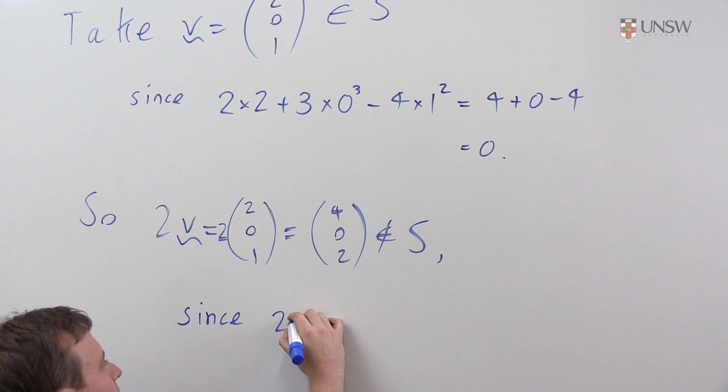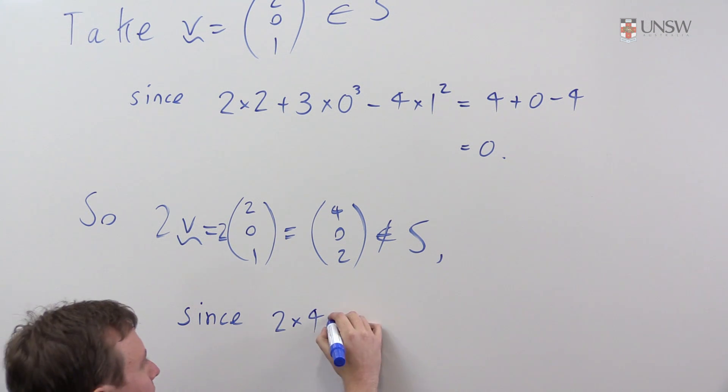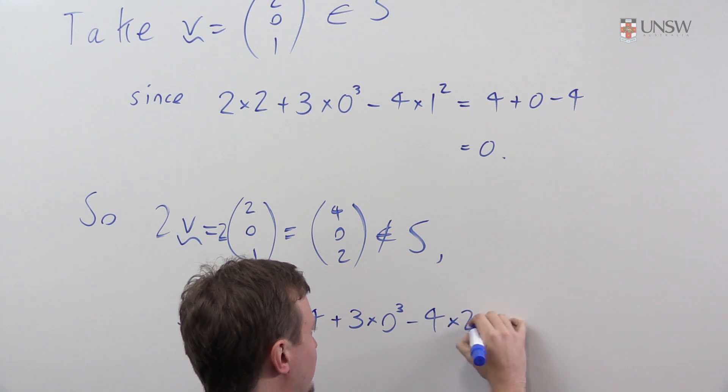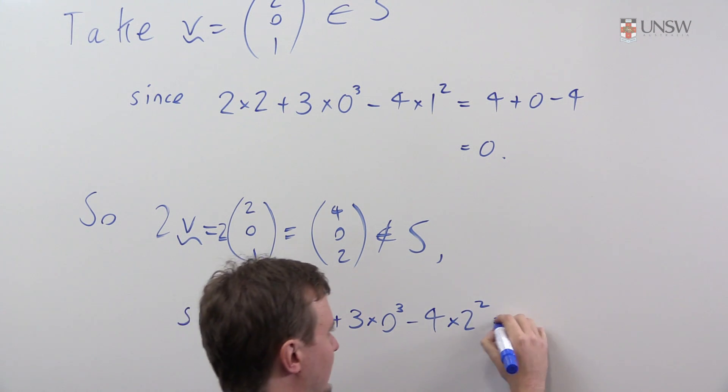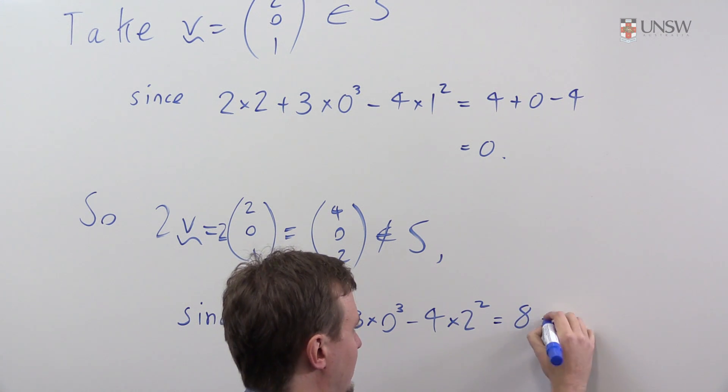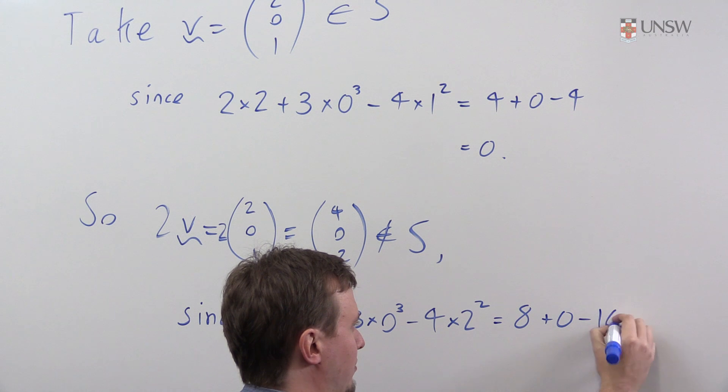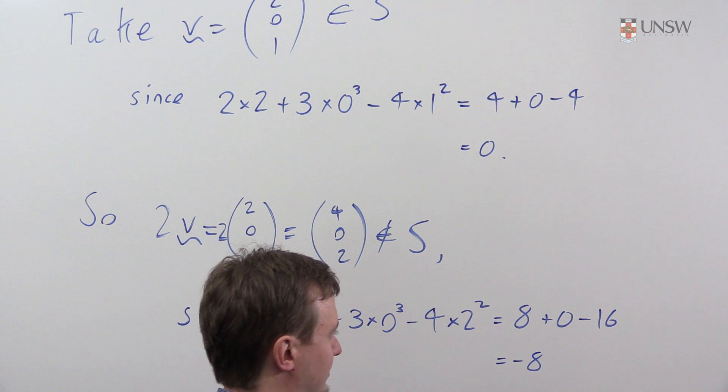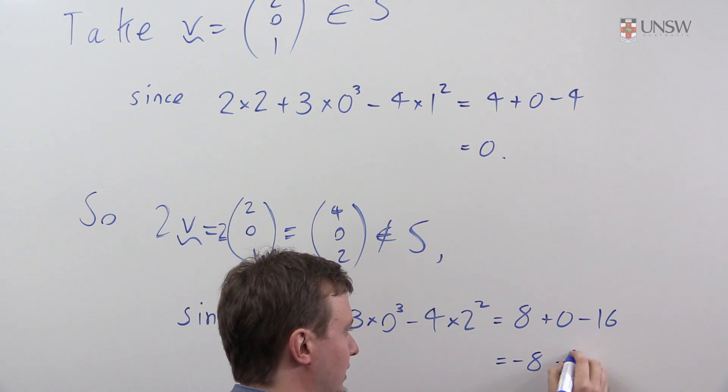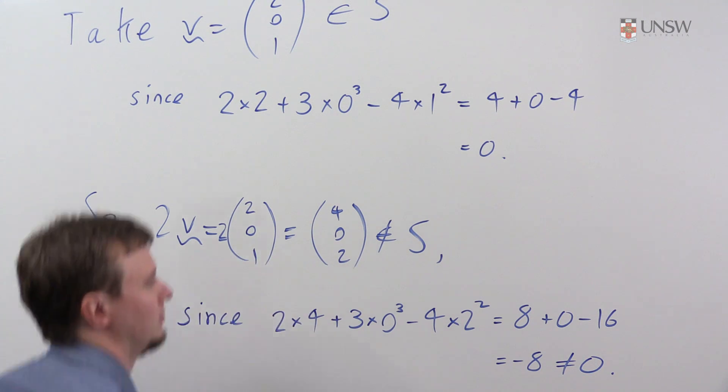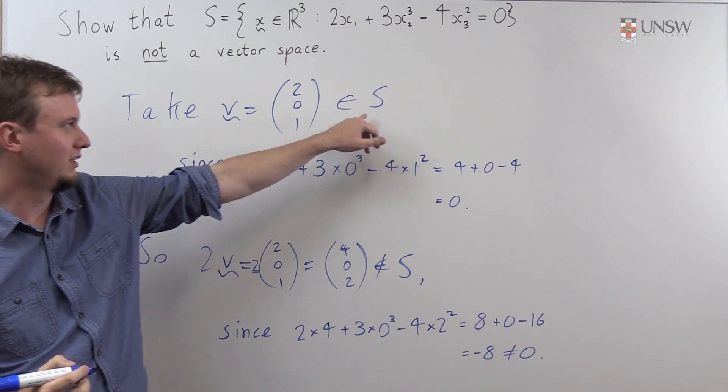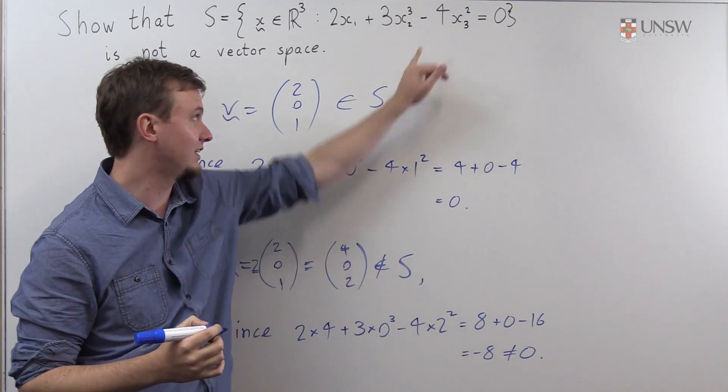Since 2 times 4 plus 3 times 0 cubed minus 4 times 2 squared, well, that is 8 plus 0 minus 16, which is minus 8. And minus 8, as we all probably know, is not equal to 0. So 2 times V is not in S. It doesn't satisfy this equation.